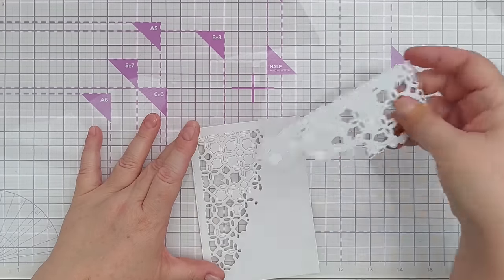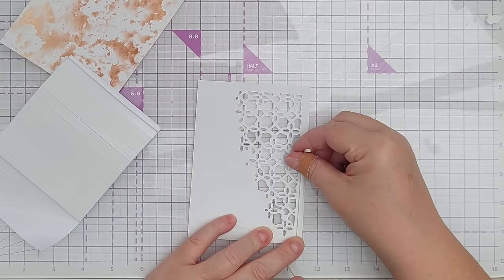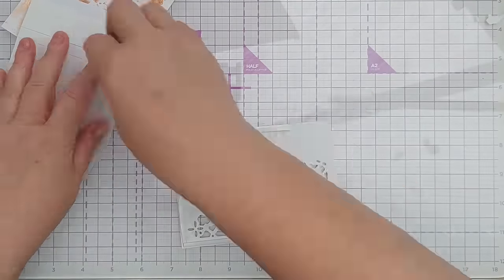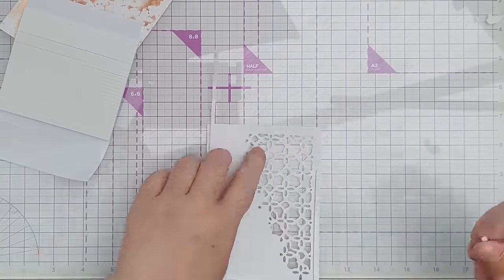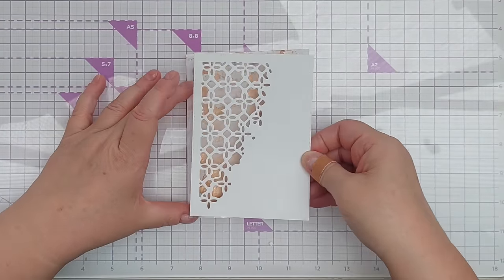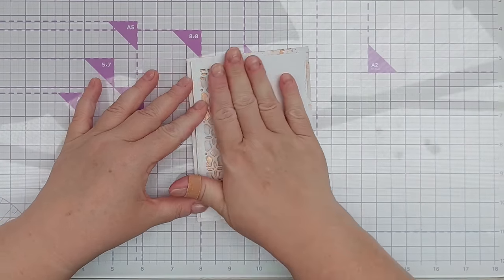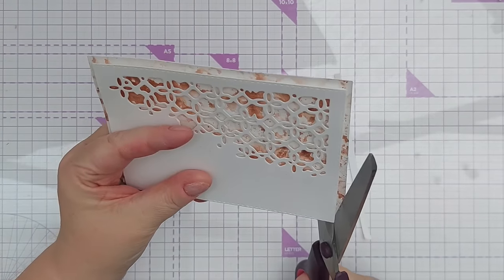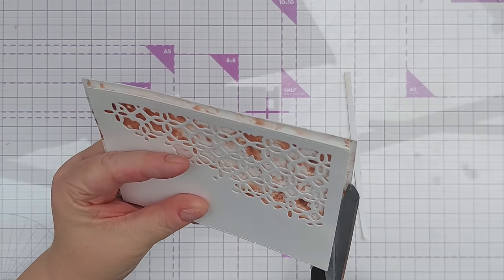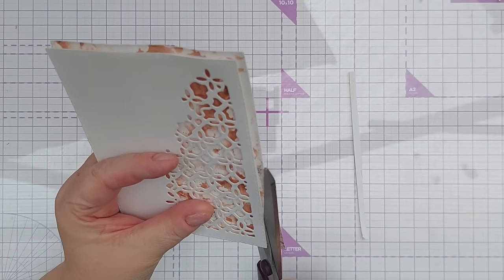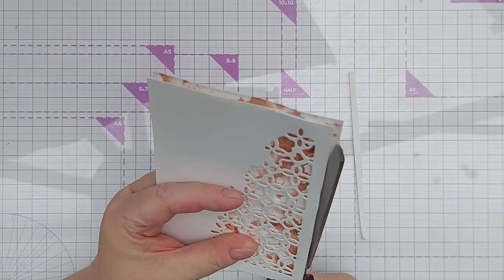I then put foam tape on the back and placed this on the smushed background that I made—this was the one I did with my smusher—and you can see all that lovely color and shimmer and random pattern peeking through the aperture of the card. I didn't particularly want to have the smushed background as a border around my panel, so I trimmed it all off with my scissors and then I stuck it onto a card base.